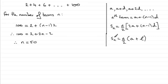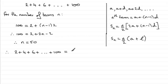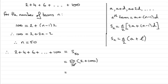Now we know there are 50 terms, we can find the sum using the formula S_50 equals n over 2 times (first term plus last term). So: 2 plus 4 plus 6 plus ... up to 100 equals S_50, which is 50 over 2 multiplied by (2 plus 100). That gives 102 divided by 2 equals 51, and 50 times 51 equals 2550.